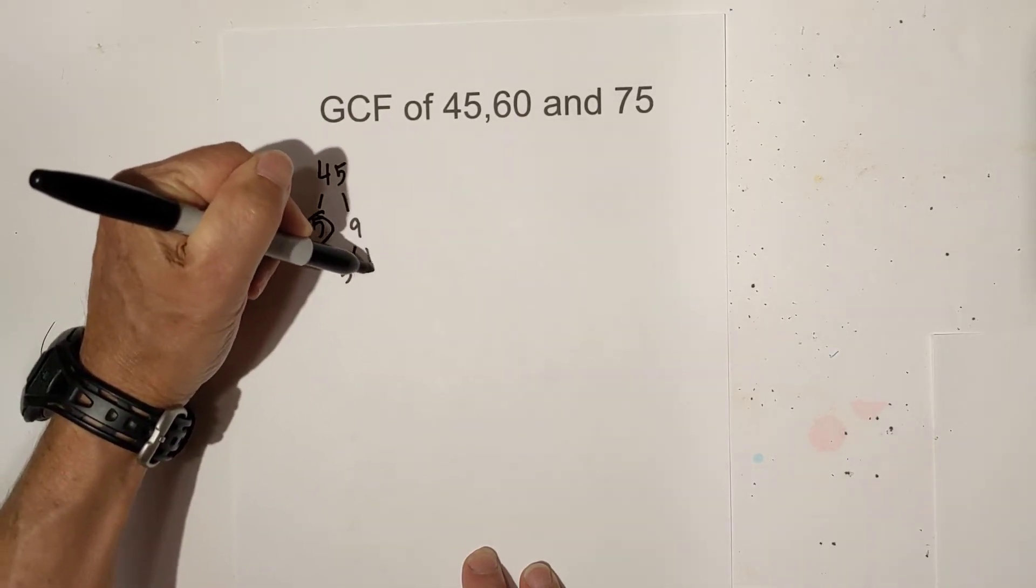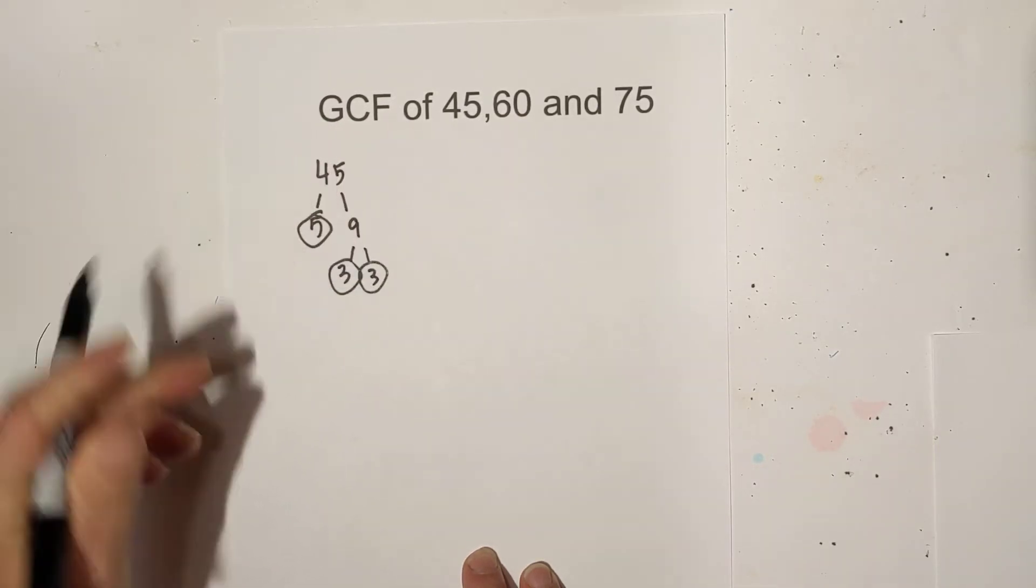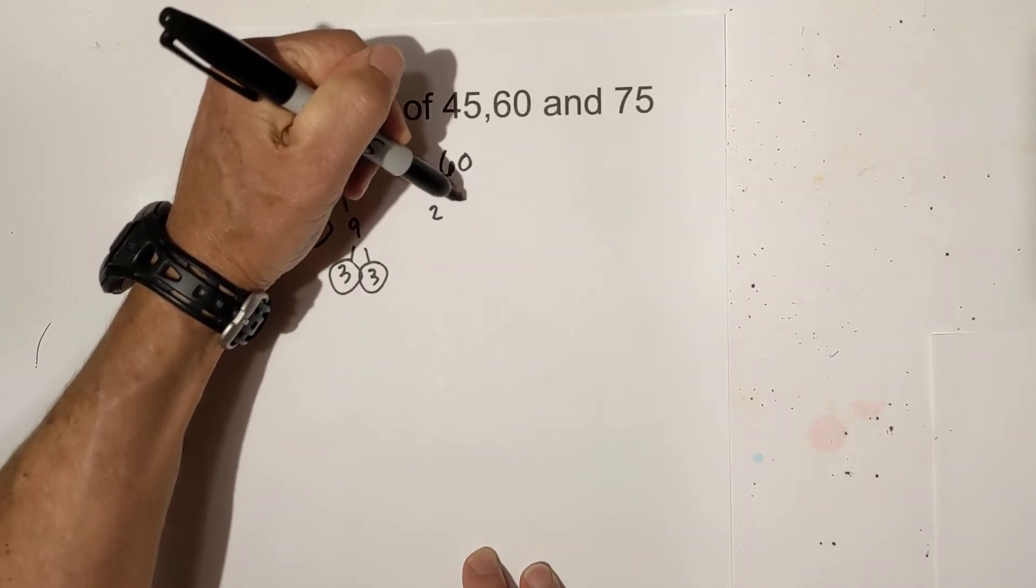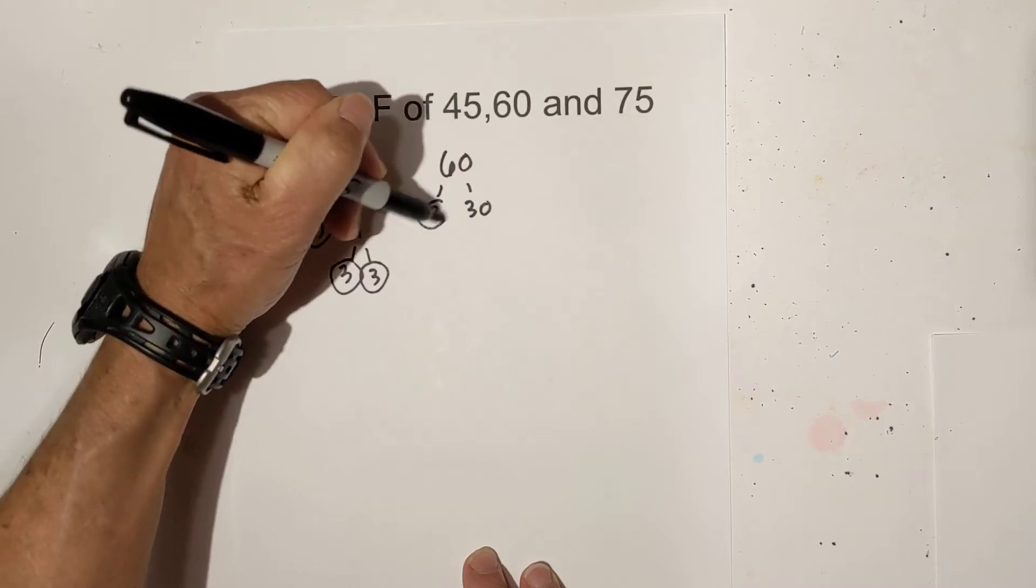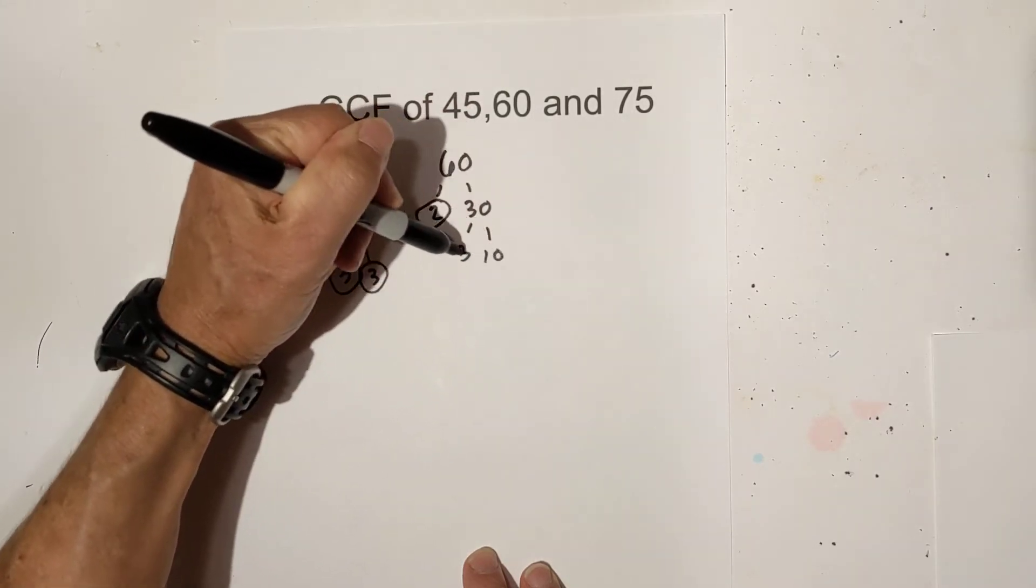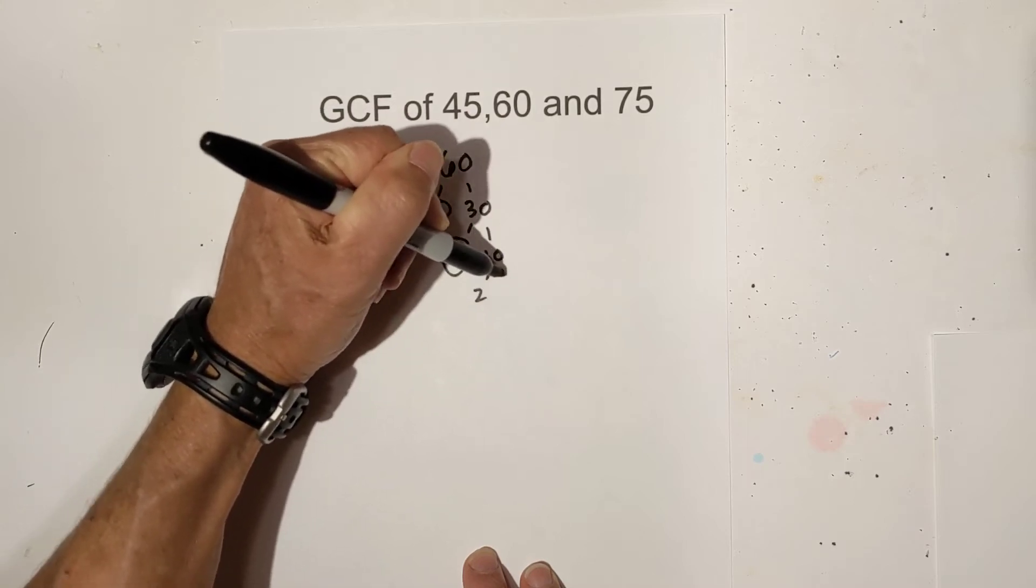And then 3 times 3 and I'm now down to prime numbers. Let's do the same for 60. Let's go 2 times 30 and then let's go 3 times 10 and then 2 times 5.